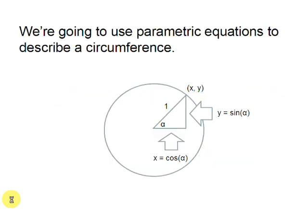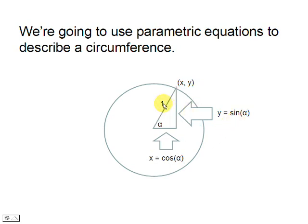We are going to use parametric equations to describe a circumference. You need to remember that in a unit circle the horizontal value of any point is given by the cosine of the angle, and the vertical value is given by the sine of the same angle.